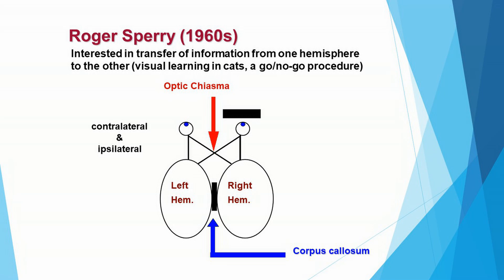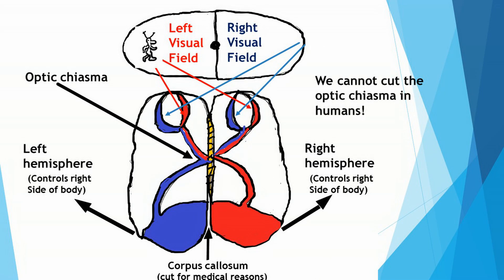This is how Roger Sperry's so-called split brain studies were initially conducted. What about humans? What happens when the corpus callosum is cut, or the left hemisphere is disconnected from the right hemisphere in humans? You cannot, for research purposes, cut the corpus callosum of a human — it would be unethical and illegal.